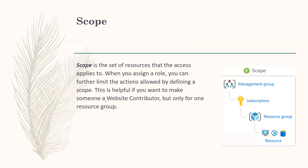Scope is the set of resources that access applies to. When you assign a role, you can further limit the actions allowed by defining a scope. In Azure, you can specify a scope at multiple levels: management group, subscription, resource group, or resource. Scopes are structured in a parent-child relationship. When you grant access at a parent scope, those permissions are inherited to child scopes. For example, if you assign a role to a user at the management group scope, the user can manage everything in all subscriptions in that management group. If you assign the reader role to a group at the subscription scope, the members of that group can view every resource group and resource in the subscription.